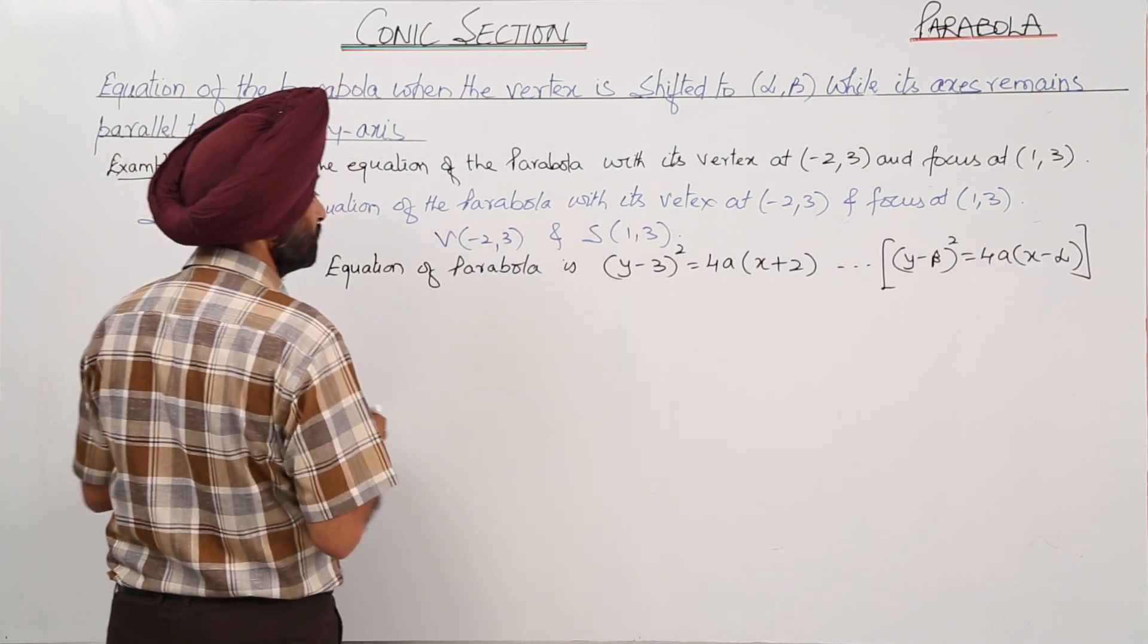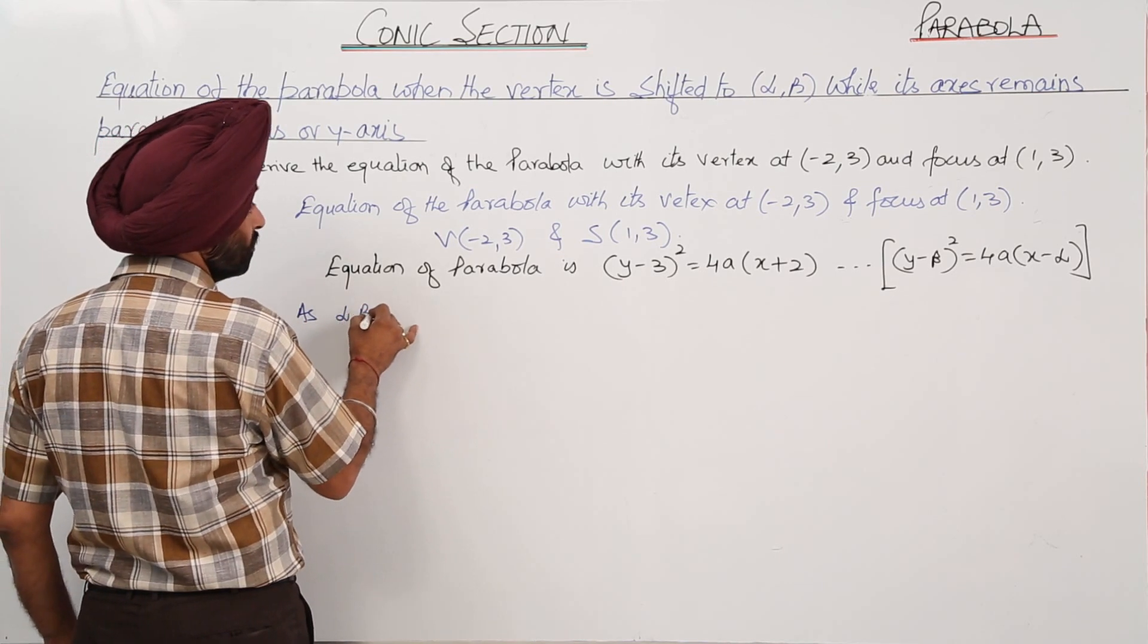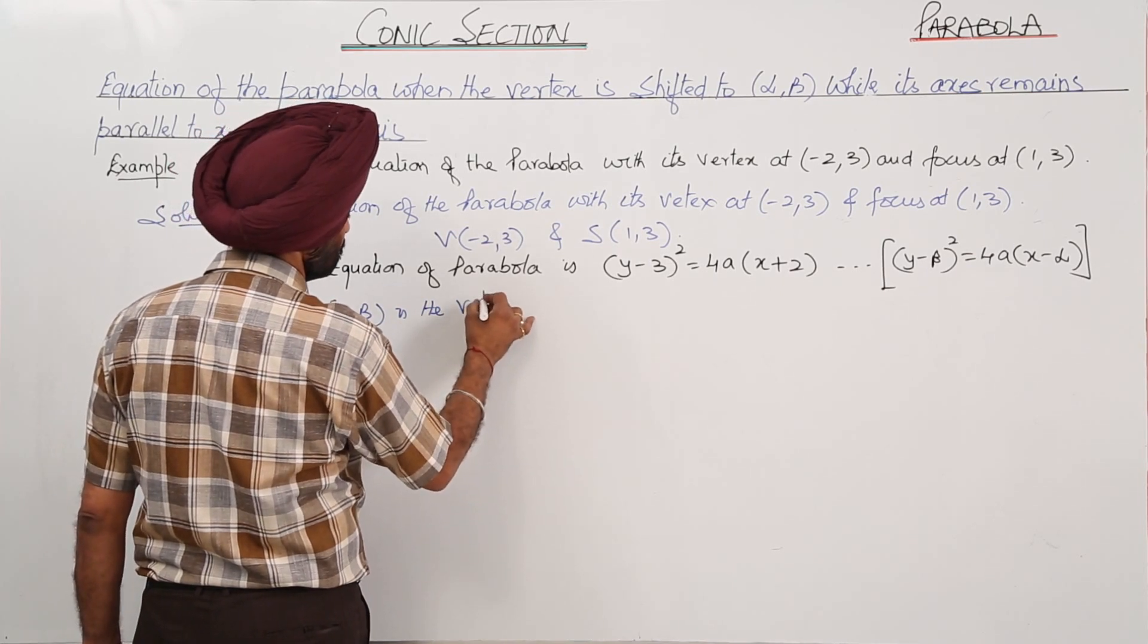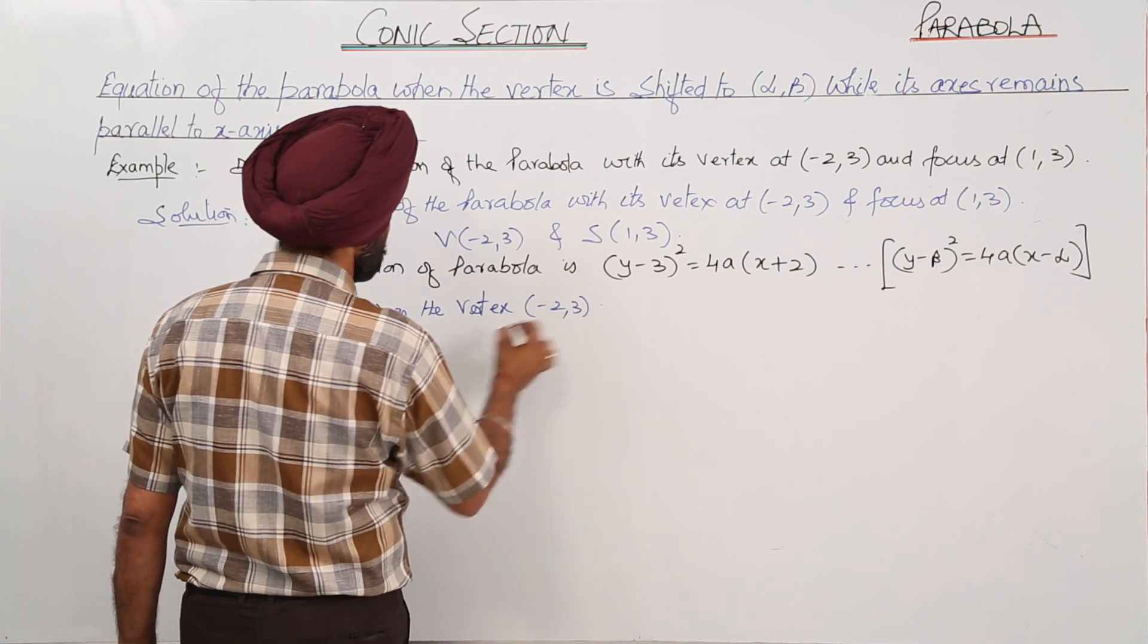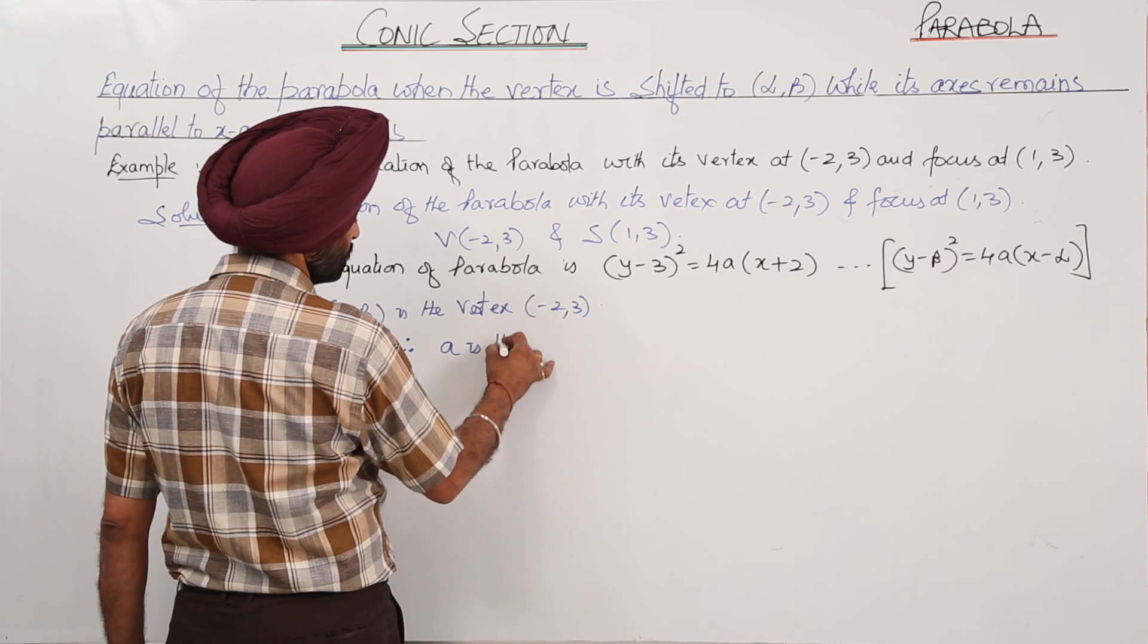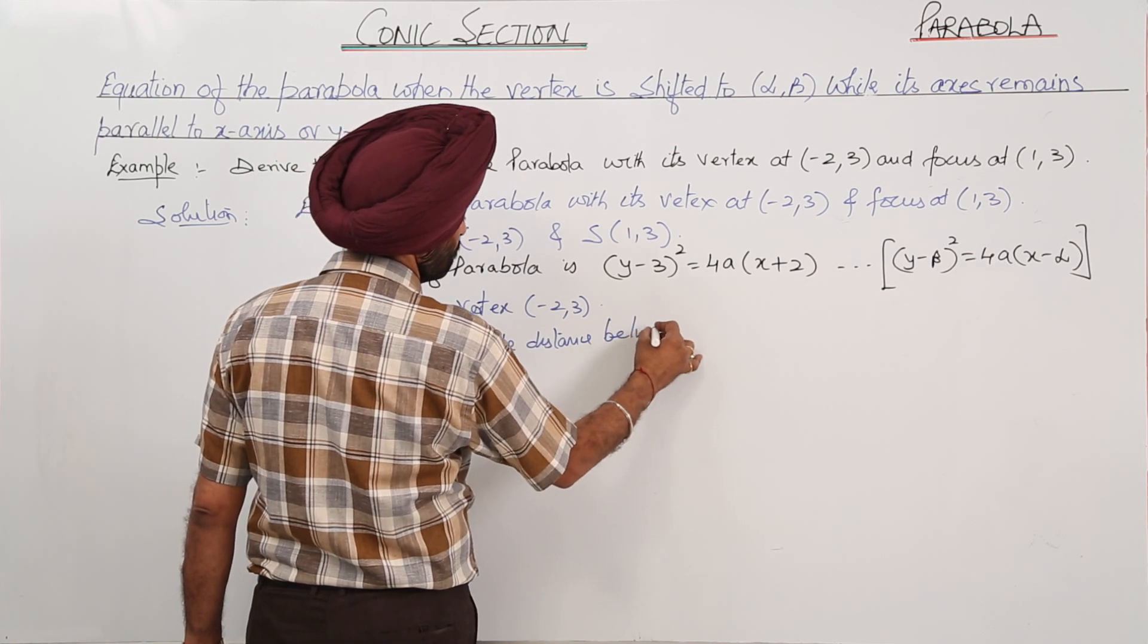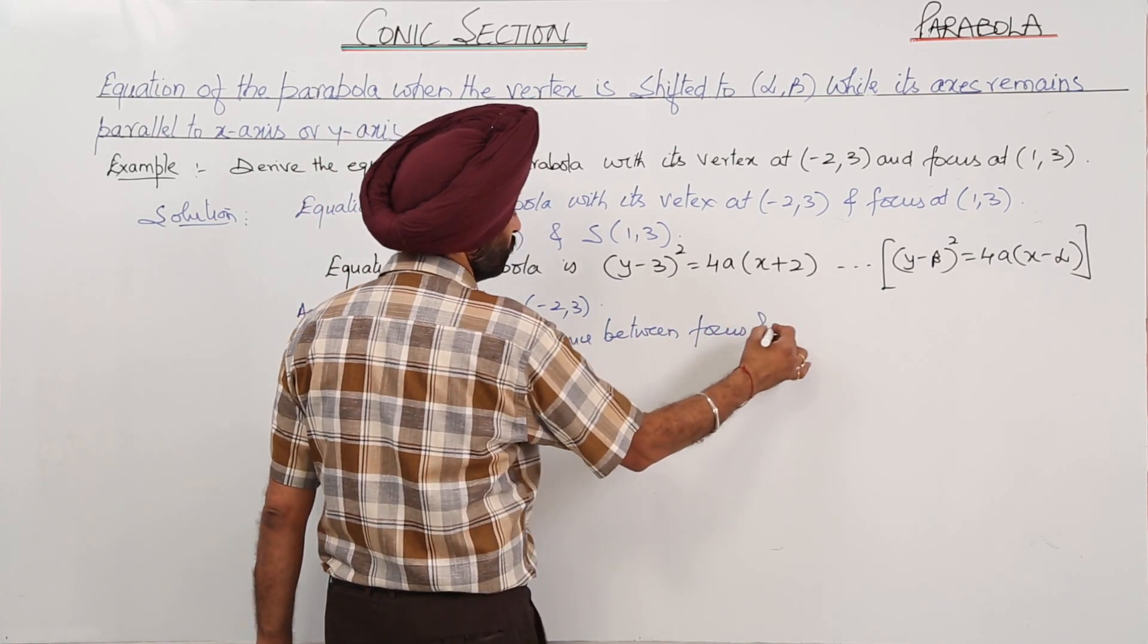As (α,β) is the vertex (-2,3), therefore a is the distance between focus and vertex.